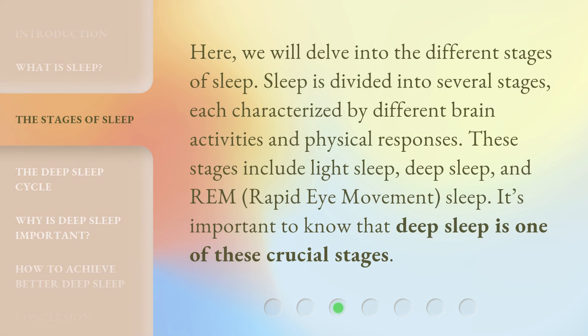Here, we will delve into the different stages of sleep. Sleep is divided into several stages, each characterized by different brain activities and physical responses. These stages include light sleep, deep sleep, and REM — rapid eye movement — sleep. It's important to know that deep sleep is one of these crucial stages.